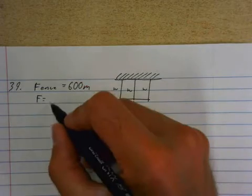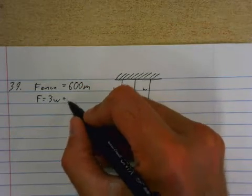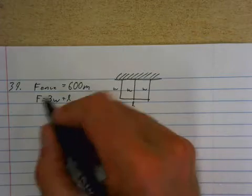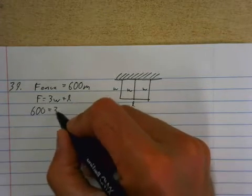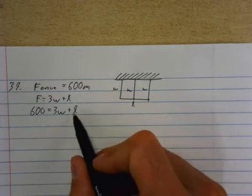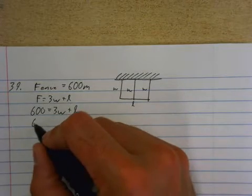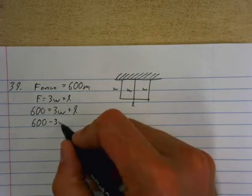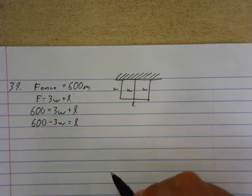The total fence is going to be equal to three widths plus one length. Now the fence is 600 and that's three widths plus one length. And what I want to do is isolate, so I get an equation for length. So if I take 600 and minus three W's from it, I have length.